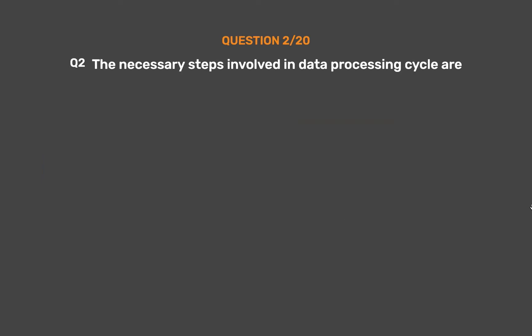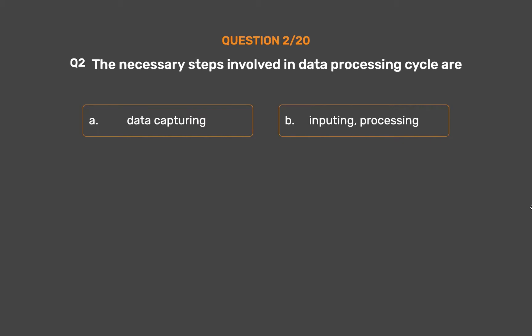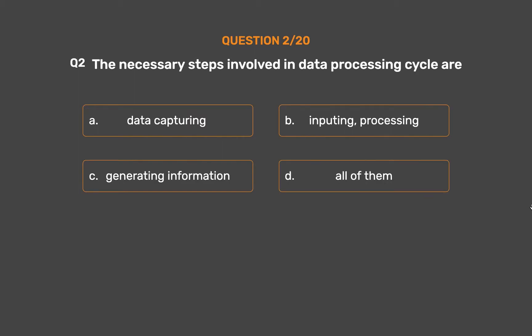Question number 2. The necessary steps involved in the data processing cycle are: Option A: Data capturing. Option B: Inputting and processing. Option C: Generating information. Option D: All of them.